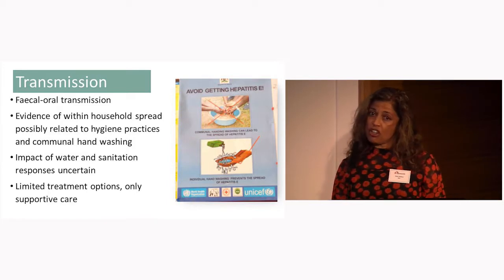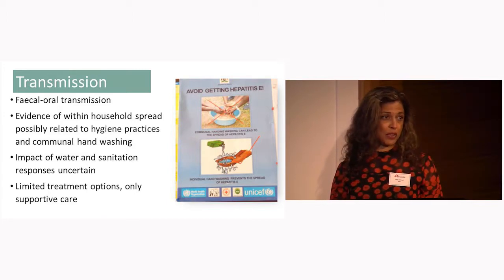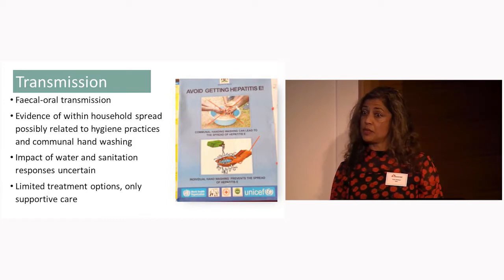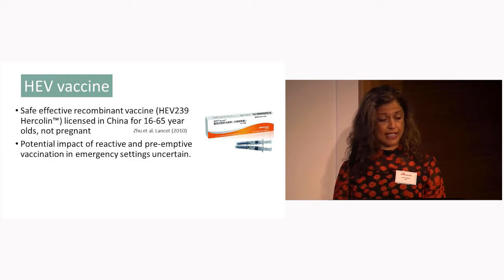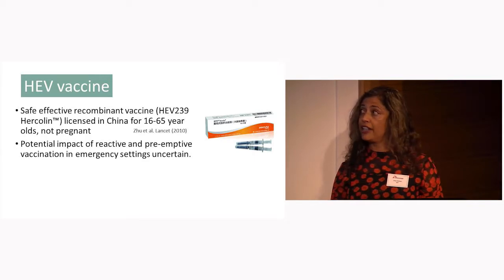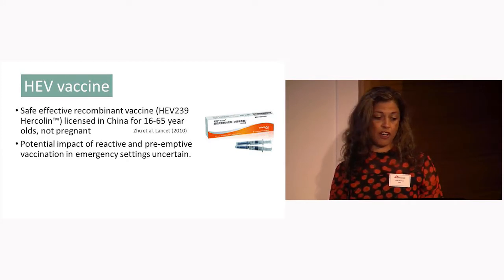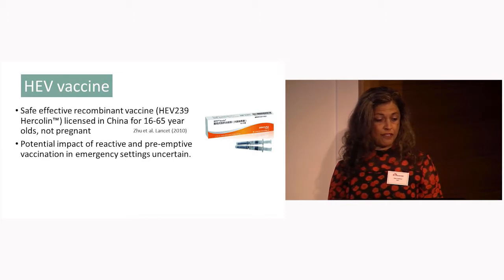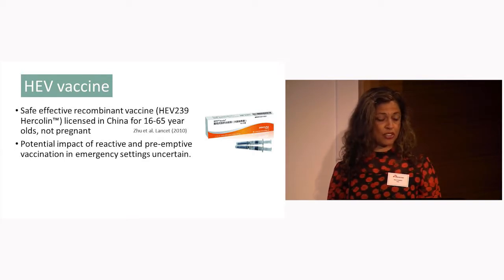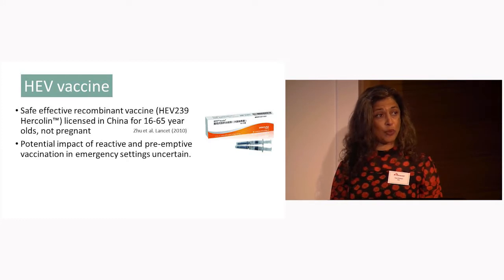In terms of control, the impact of water and sanitation responses is uncertain, and in terms of treatment, we have fairly limited options, really only supportive care. But there is a hepatitis E vaccine shown to be safe and effective — it's called HEV239, or Hecolin — though it's only licensed in China for use in 16- to 65-year-olds that are not pregnant. Its effectiveness was established in a large-scale randomized control trial published in The Lancet in 2010, in an endemic setting in China, but its potential impact in an outbreak setting is uncertain.